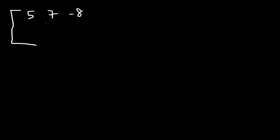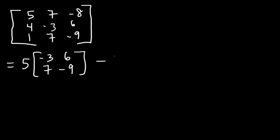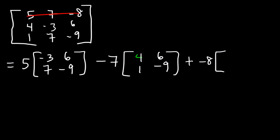Let's go ahead and work on another example. Let's say this is 5, 7, negative 8, 4, negative 3, 6, 1, 7, and negative 9. Go ahead and calculate the determinant of this 3x3 matrix. The first number is 5, and if we get rid of the first row and first column, we get negative 3, 6, 7, negative 9. Next we use 7, and removing the first row and second column gives us 4, 1, 6, negative 9. And then negative 8: removing row 1 column 3 leaves 4, negative 3, 1, 7.